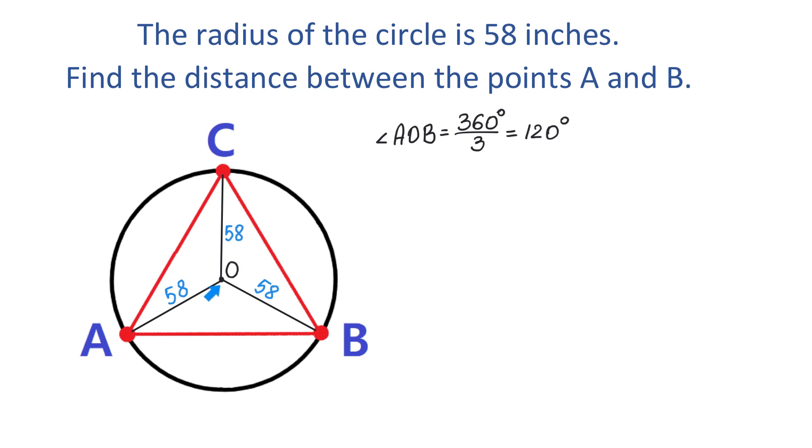Now from the center of this circle, we will draw a perpendicular down to the line segment AB. Then this perpendicular splits the line segment AB into two equal parts. Let's call this point of intersection point D. Then we can say that AD is equal to DB. This perpendicular also splits the angle AOB into two equal angles, each measuring 60 degrees.